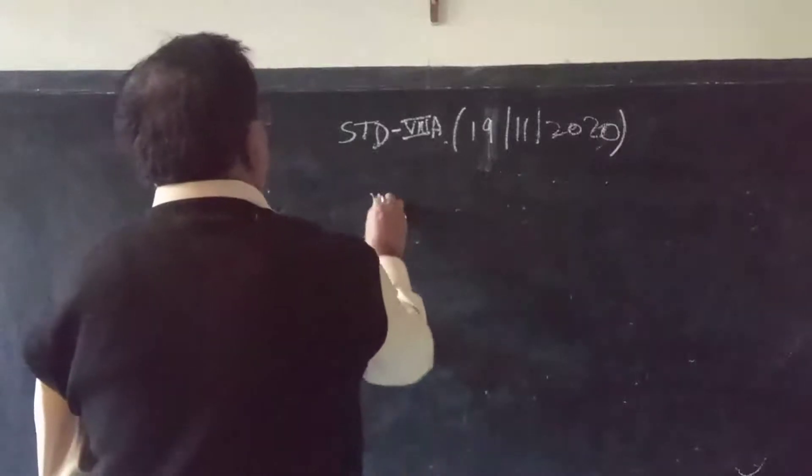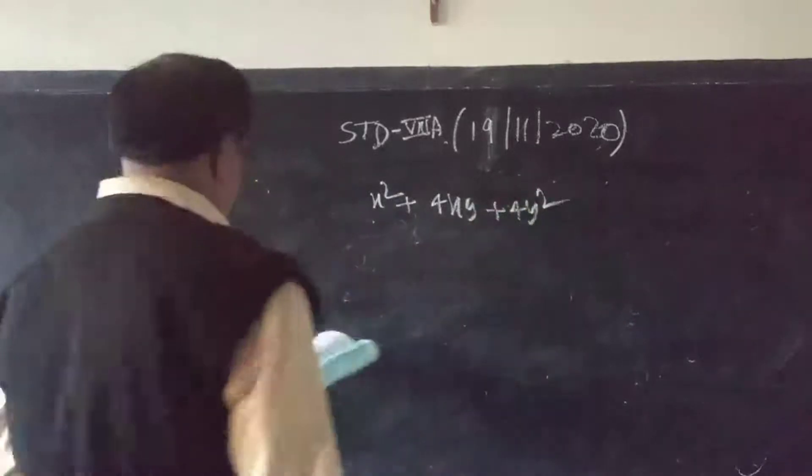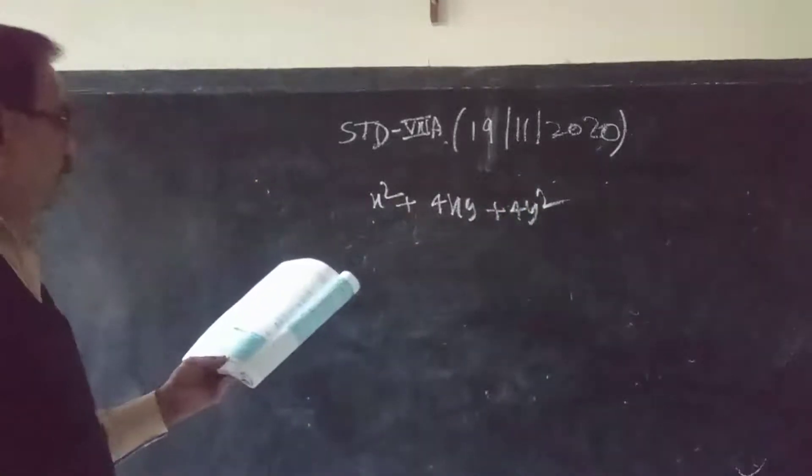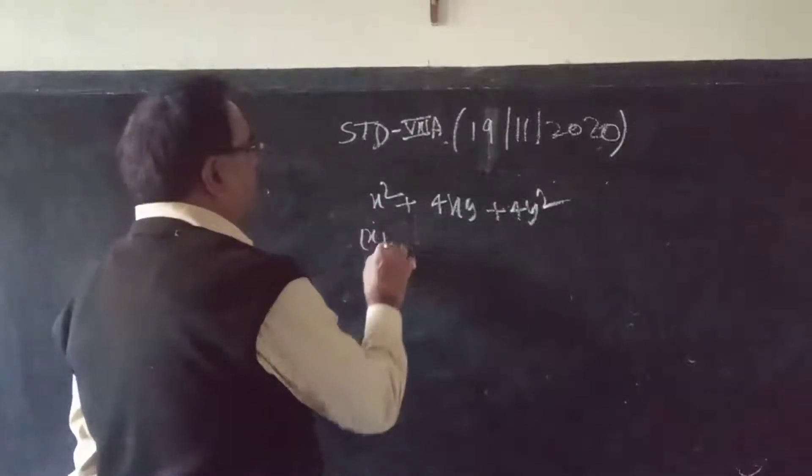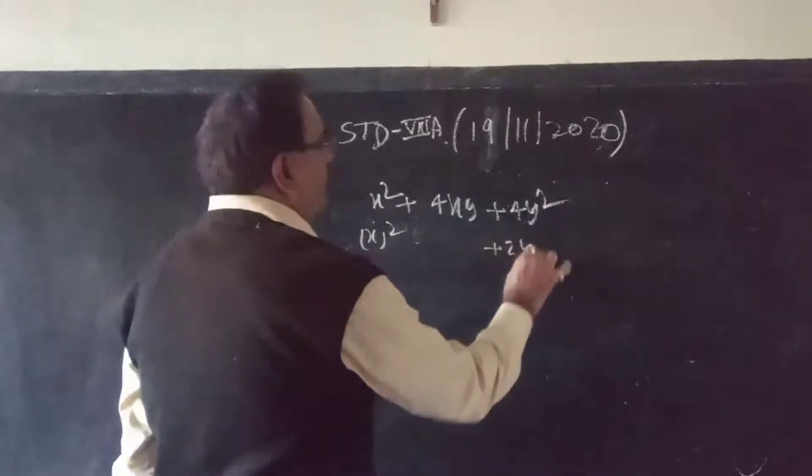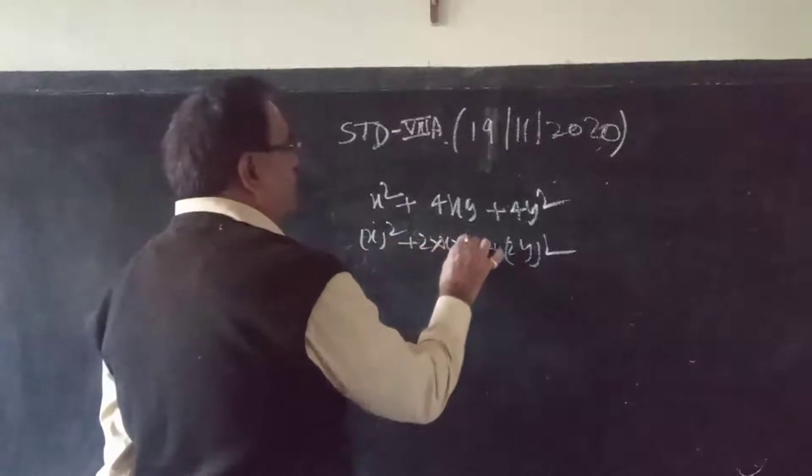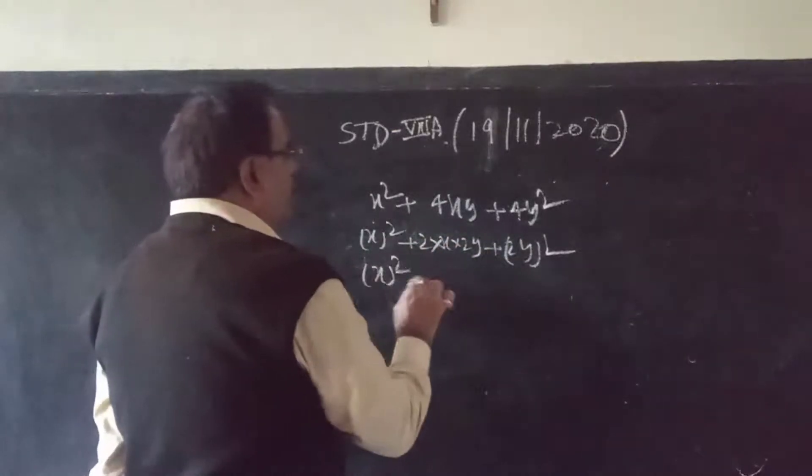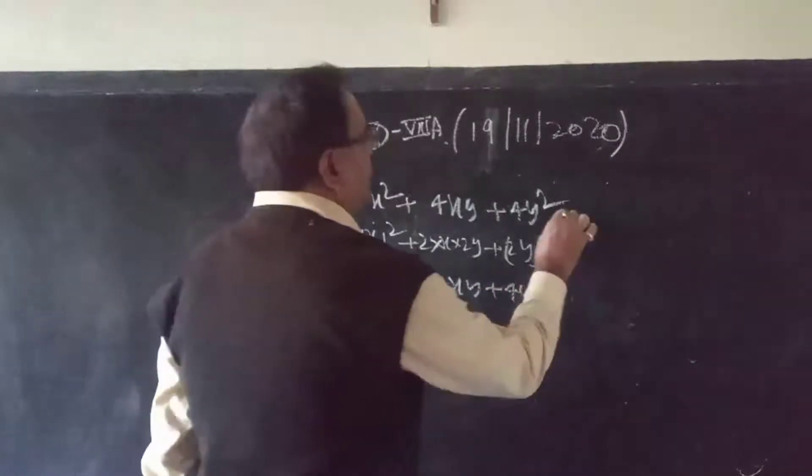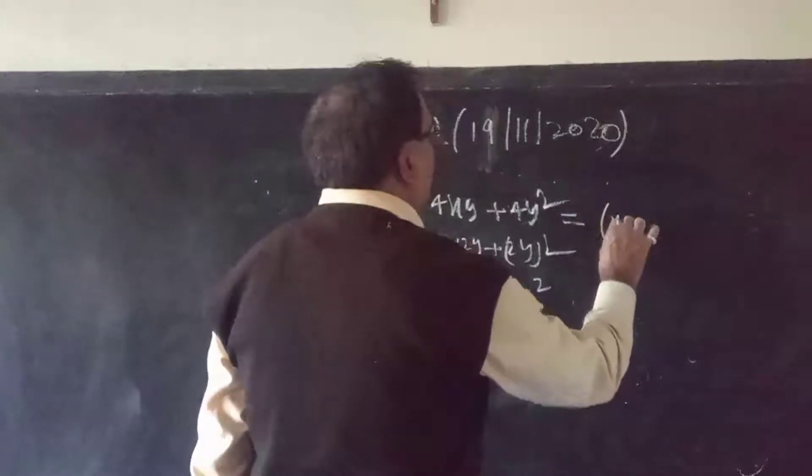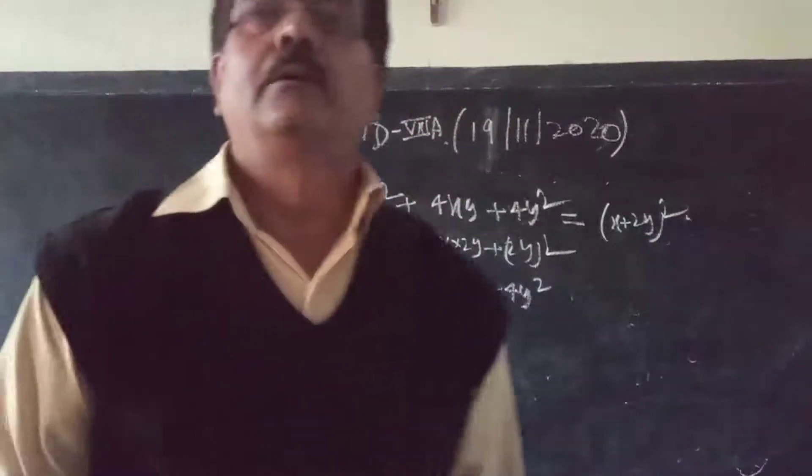Next: x squared plus 4xy plus 4y squared minus C. This is a perfect square. We have x squared, and this is 2y in the middle times 2. A is x, B is 2y. So x squared plus 4xy plus 4y squared minus C, yes it is a perfect square. The answer is x plus 2y squared. Is it clear?